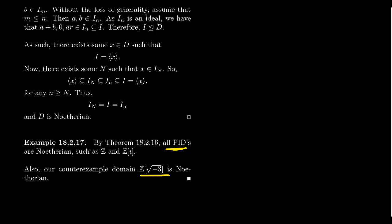Now, we've often looked at the ring Z adjoined the square root of negative three as a counterexample to the factorization principles we're learning about here. Z adjoined the square root of negative three was not a unique factorization domain and it's not a principal ideal domain, but it is still actually Noetherian — it's a Noetherian domain. It takes a lot of effort to come up with an integral domain that is not Noetherian. The proof that Z adjoined the square root of negative three is Noetherian I'm going to leave to the viewer — mimicking techniques we've seen already in this lecture series, you could show that it satisfies the ascending chain condition, or equivalently that every ideal in Z adjoined the square root of negative three is finitely generated.